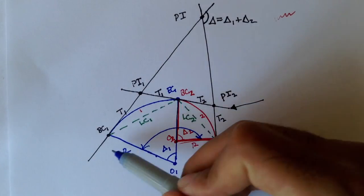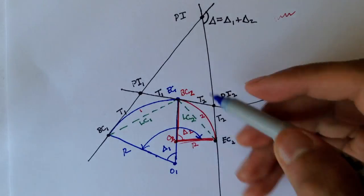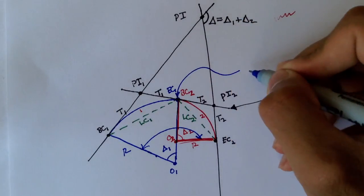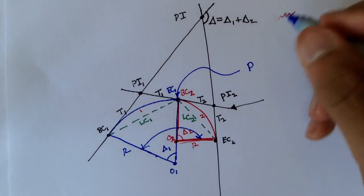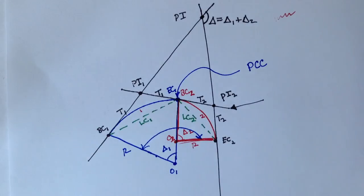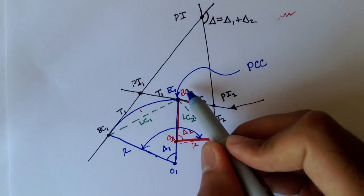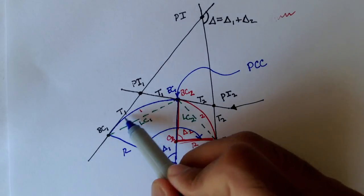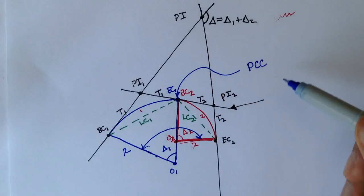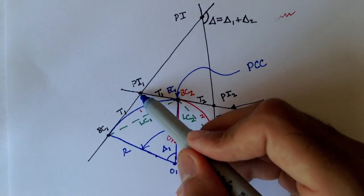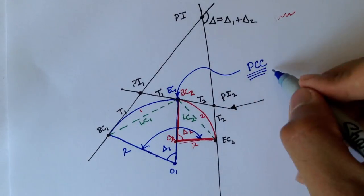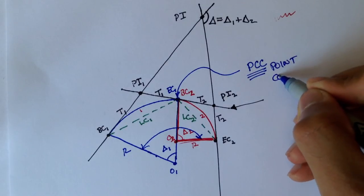One last point: the point where the first curve ends and the second curve starts — where we drew this very important tangent line — is called the Point of Common Curvature, or PCC. The Point of Common Curvature is where EC1 and BC2 are the same. Where one curve ends, that's where the second curve starts. At that point, this tangent line is drawn, which creates PI1 and PI2.